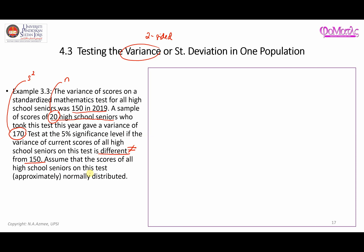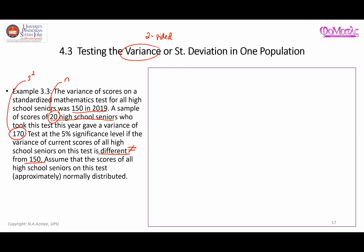We assume that the scores of all high school seniors on this test are approximately normally distributed. Step one is to write down the hypothesis statements. The null hypothesis H0 is that the population variance equals 150, and the alternative hypothesis H1 is that the population variance is not equal to 150.